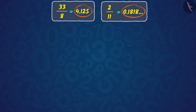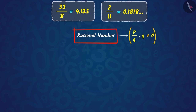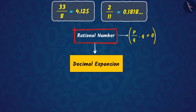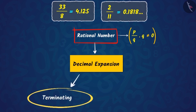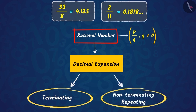What do you understand by looking at these decimal expansions? You studied in your last class that the decimal expansion of a rational number P upon Q, where Q is not 0, will either be terminating — like here, the decimal expansion of 33 upon 8 is terminating — or non-terminating, that is repeating, like here, the decimal expansion of 2 upon 11 is non-terminating and repeating.